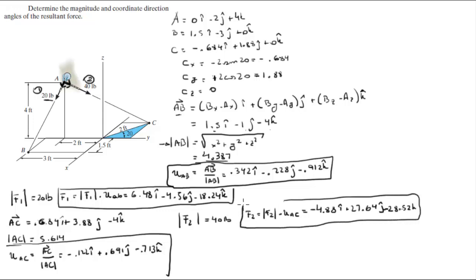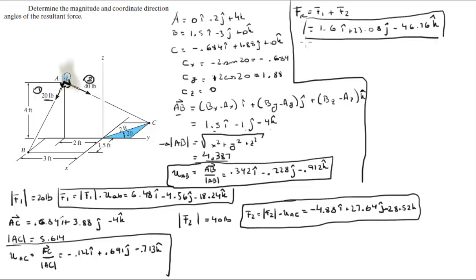We have the Cartesian vector form of the two vectors. The resultant force you just add the two Cartesian vector forms and it comes out to be 1.6i plus 23.08j minus 46.76k. Then you find the magnitude by using this formula again, which is the x, y, and z component squared and square rooted together, which comes out to be 52.2 for the magnitude.